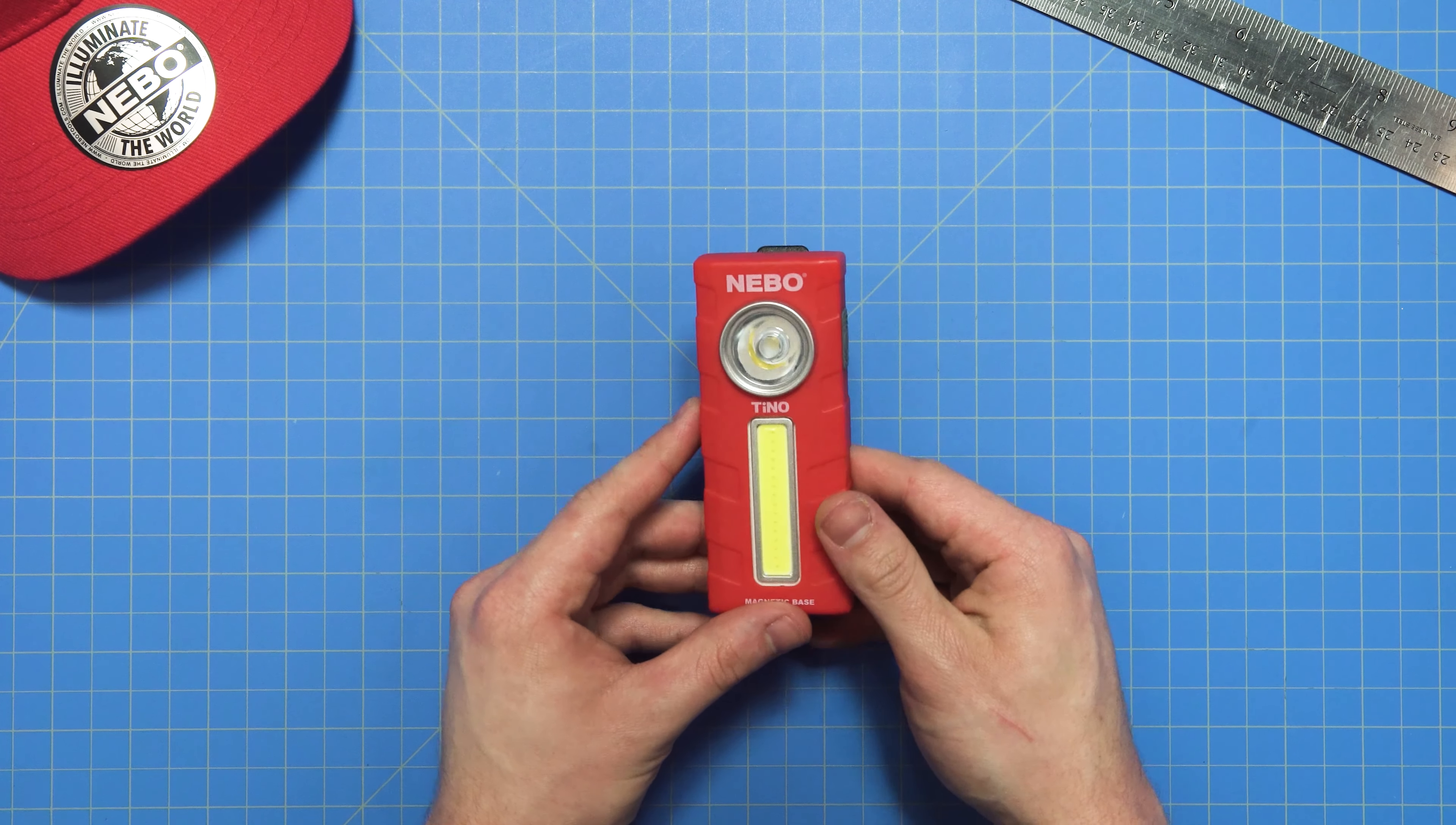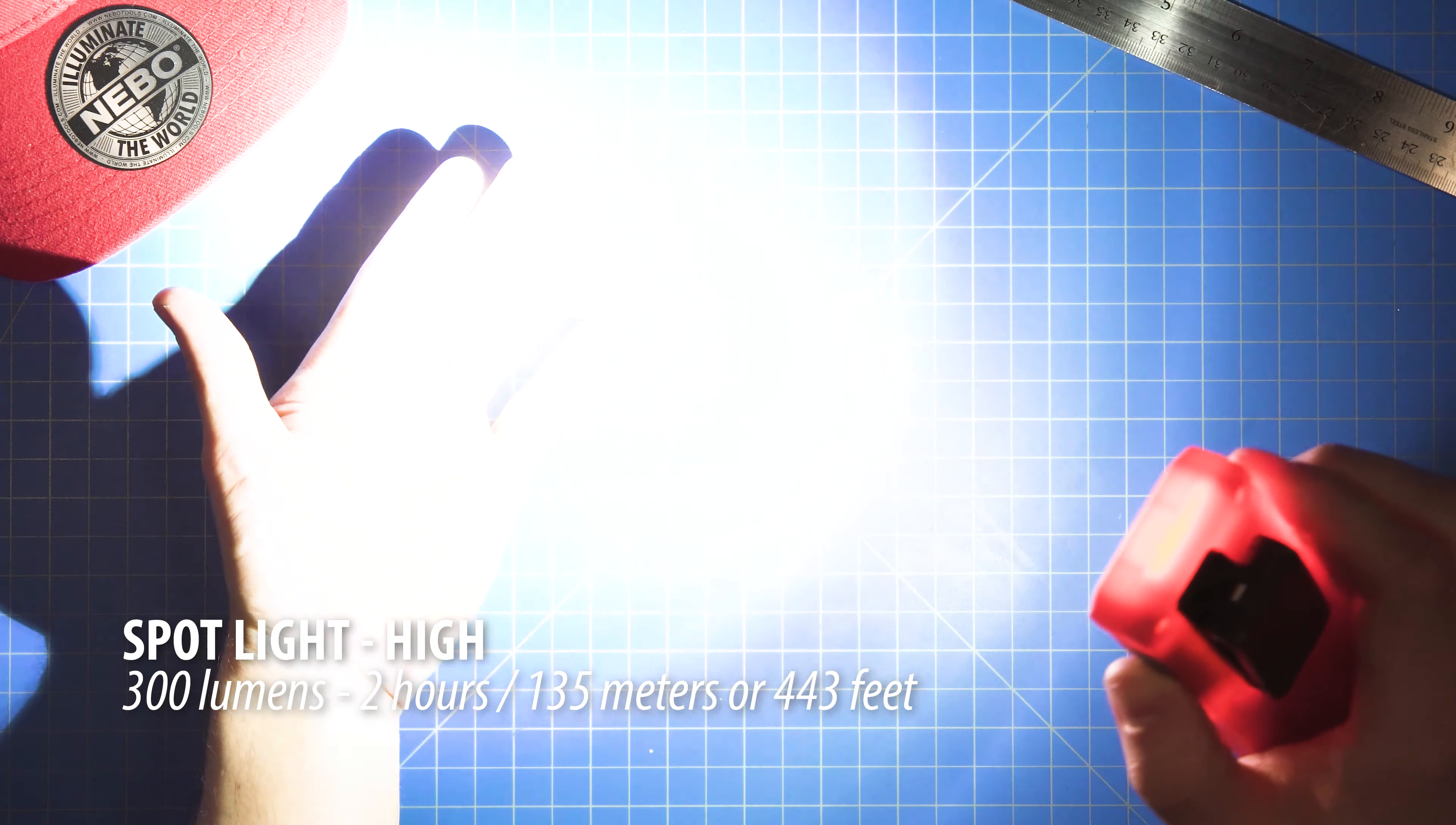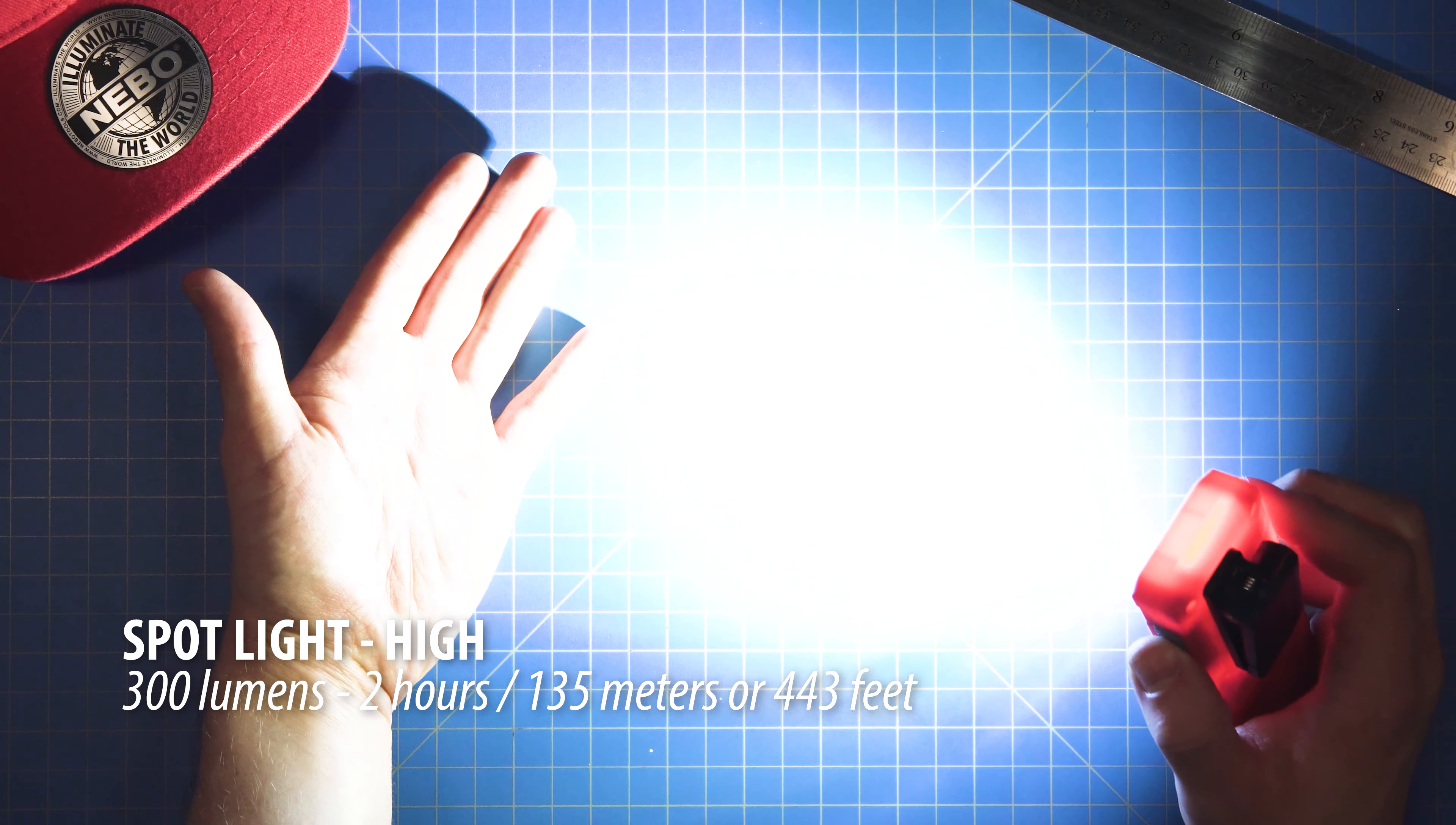Okay, now let's take a look at what you really came here for, the light. The button is on the side here, and clicking it takes us straight into the spotlight on high mode, which is up to 300 lumens shining at a whopping distance of 135 meters or 443 feet for two hours.